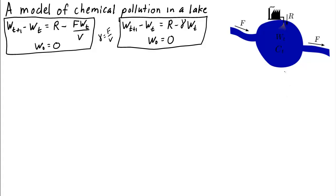We have a dynamical system model of chemical pollution in a lake, where a factory is dumping chemical into a lake at the rate r kilograms per day. The lake has volume v, and there's a river that flows with rate f through the lake each day.